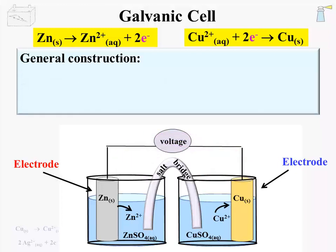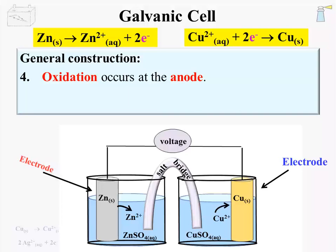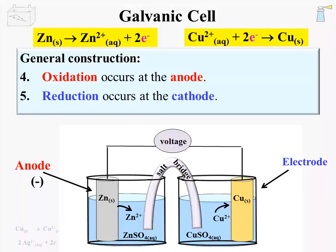Oxidation occurs at the anode — in this reaction, that is the zinc half-reaction. The term electrode can be replaced with the term anode. As a source of electrons, the anode is considered negative. Reduction occurs at the cathode — that's the copper half-reaction. That electrode term can be replaced with cathode. As the attractor of electrons, the cathode is considered positive. There is a possible conflict with the designation of positive and negative with anode and cathode: the assignment shown here is correct when electrons are generated from a reaction inside a galvanic cell, but if the electrical source is from the outside, the assignments are opposite.